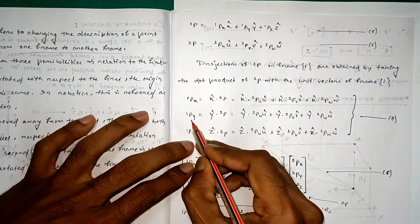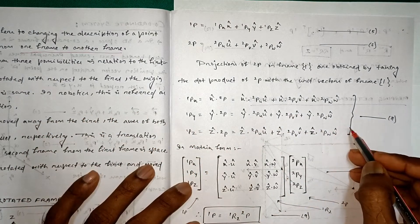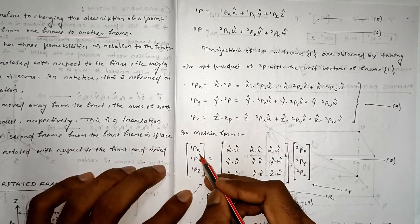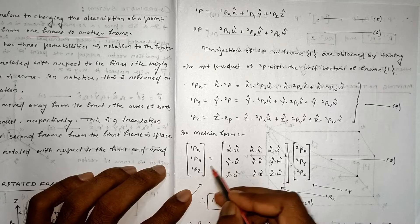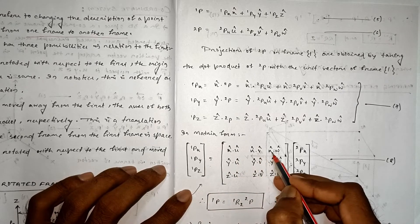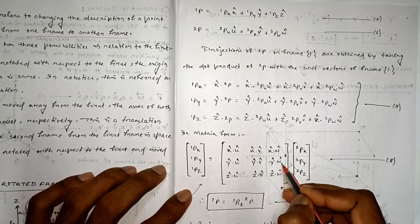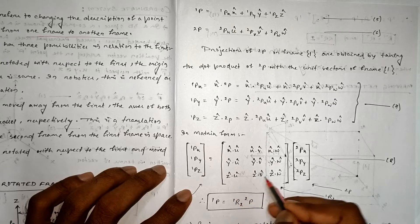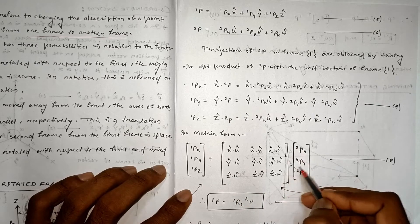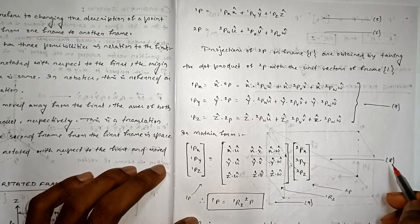In matrix form 1PX, 1PY, 1PZ is equal to x cap u cap, x cap v cap, x cap w cap, y cap u cap, y cap v cap, y cap w cap, z cap u cap, z cap v cap, z cap w cap, whole multiplied by 2PX, 2PY and 2PZ. This is our equation number 8.